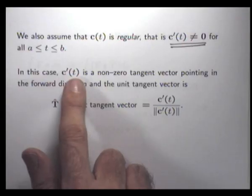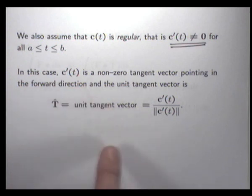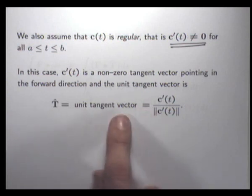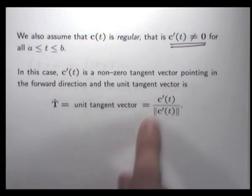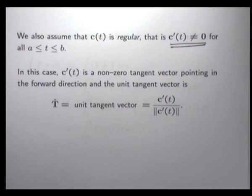In this case, c-dash is a non-zero tangent vector pointing in the forward direction. So to produce a unit tangent vector T-hat, all we do is take the tangent vector and divide by its length. That produces our unit tangent vector, big T-hat.